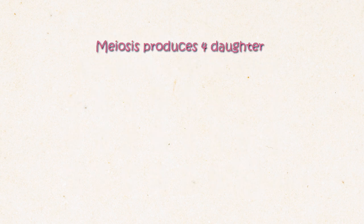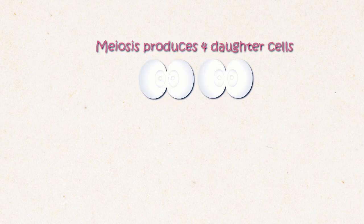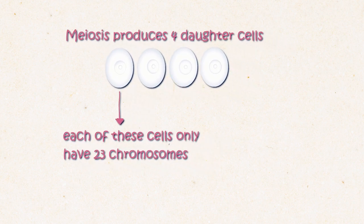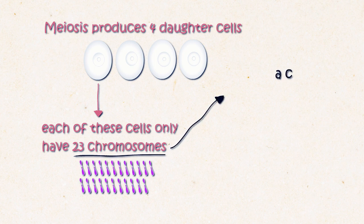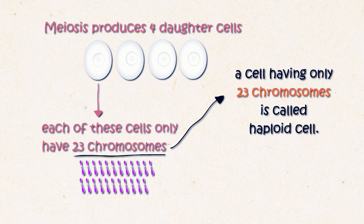Meiosis produces four daughter cells. Each of them has 23 chromosomes. A cell that only has 23 chromosomes is called the haploid cell.